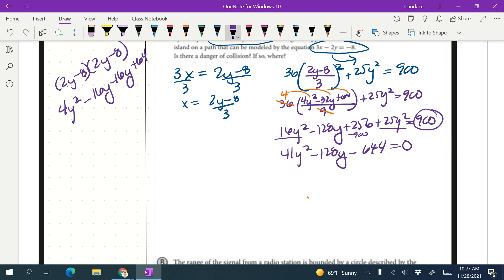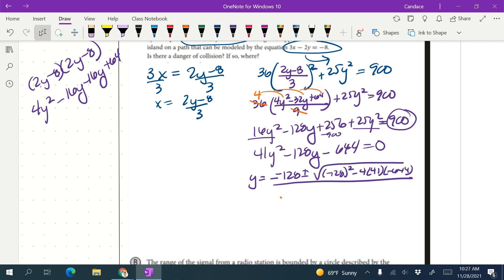So we would say that y equals negative b, so negative negative 128 plus or minus the square root of negative 128 squared minus 4 times 41 times negative 644, all over 2 times the a value 41.